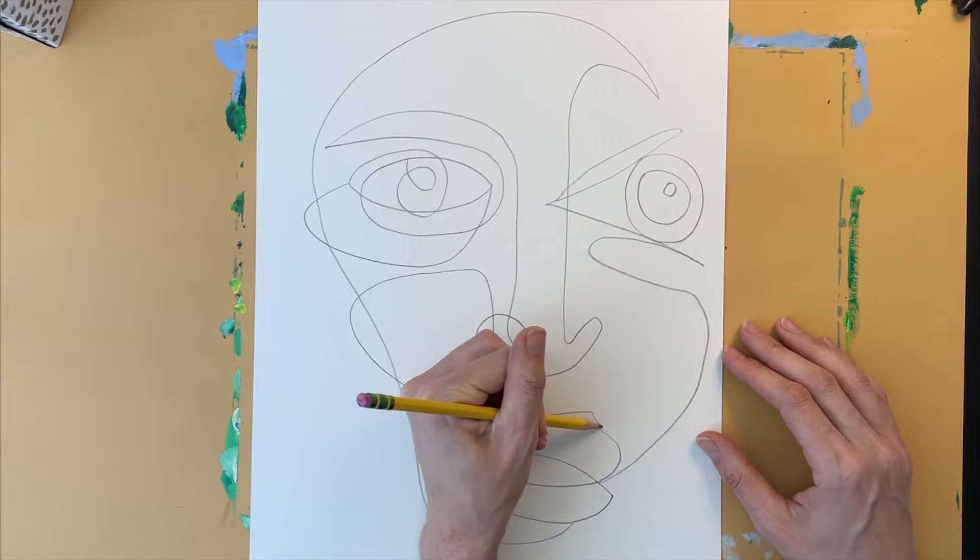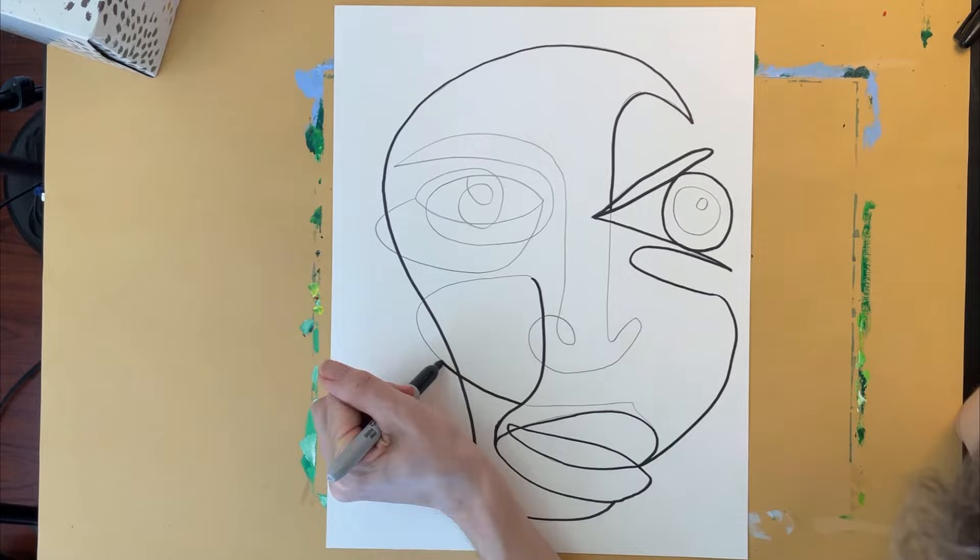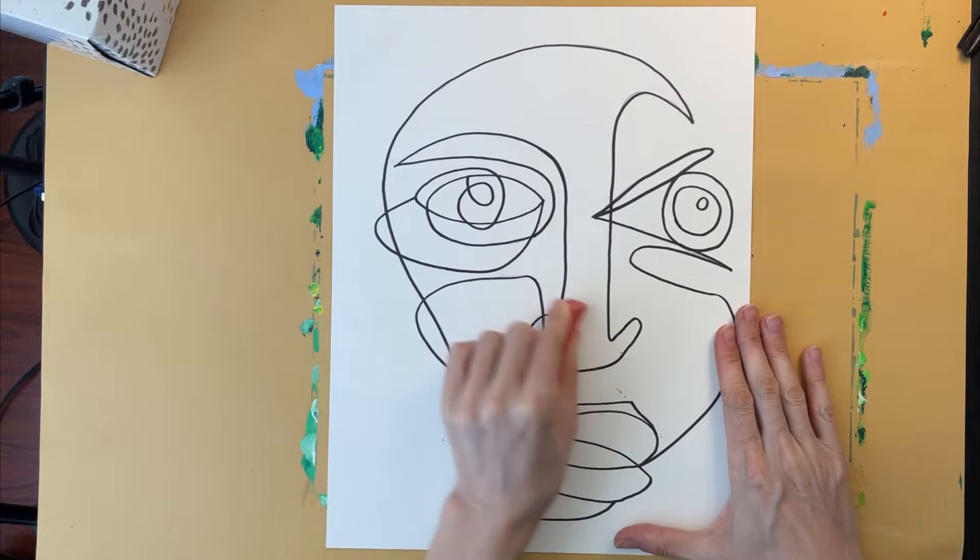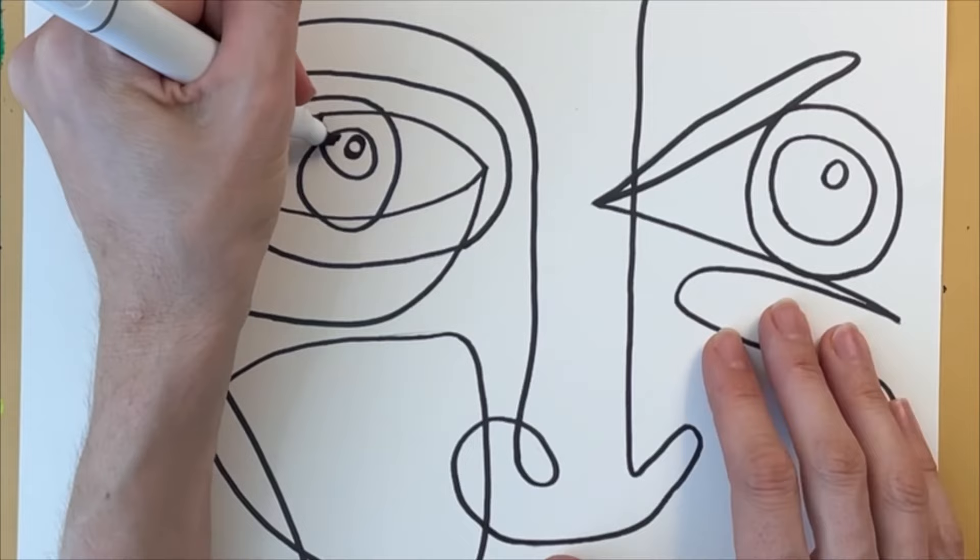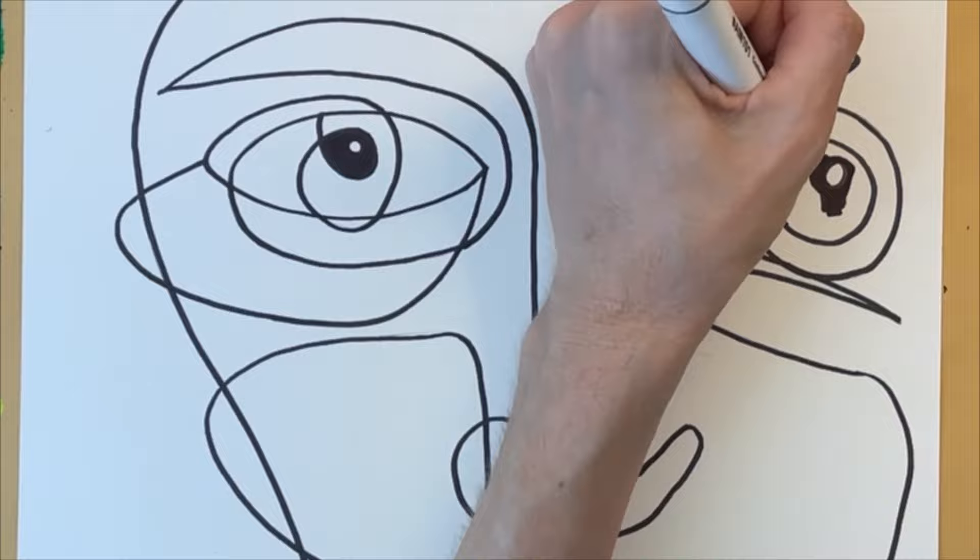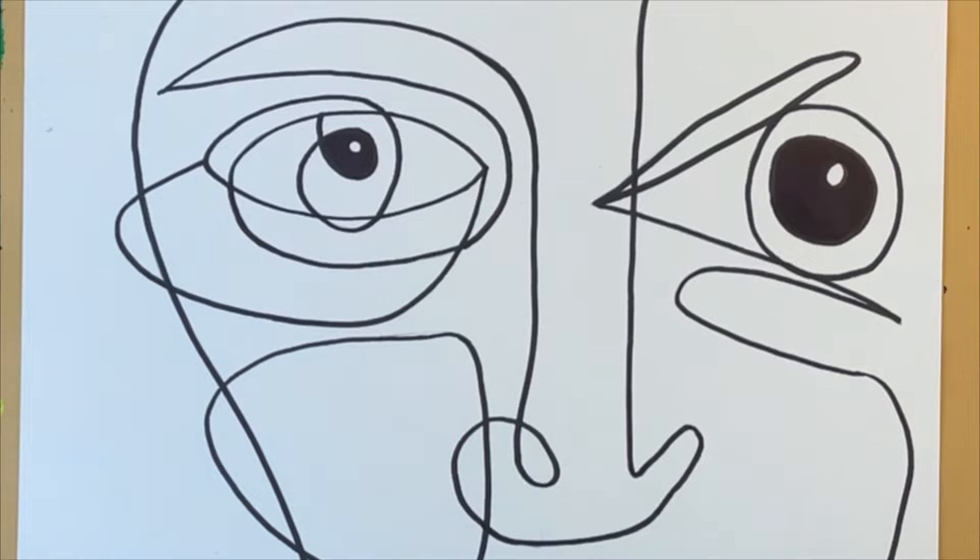If you plan to fill in your drawing with paint, I suggest you first outline it with a thick sharpie. When you're done with the sharpie, use an eraser to carefully erase your pencil marks. Notice how I'm using a black sharpie to color in the pupils. This is easier than painting them. I'm leaving the tiny circle inside the pupils white. This will make the eyes look more lifelike.